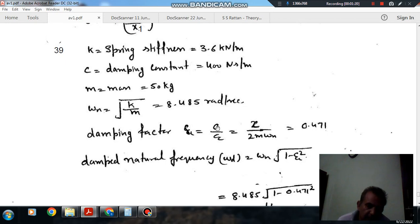The damping factor is c/cc, where c is the damping coefficient, 400 Ns/m, and cc is the critical damping coefficient, which equals 2m·omega_n. With m = 50 kg and omega_n = 8.485, this comes out as 0.471.